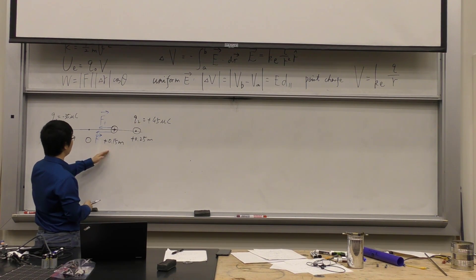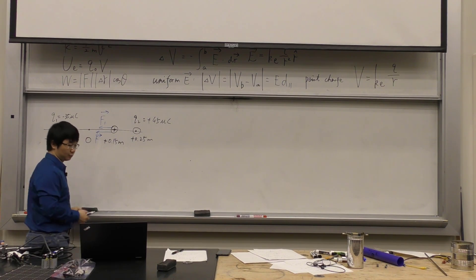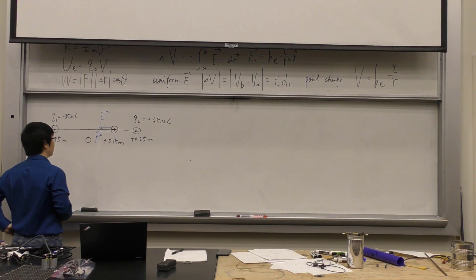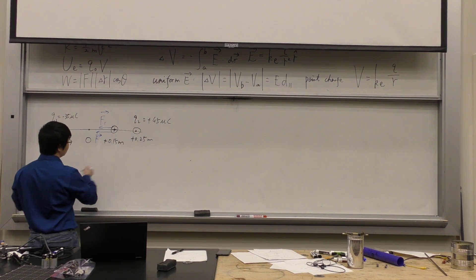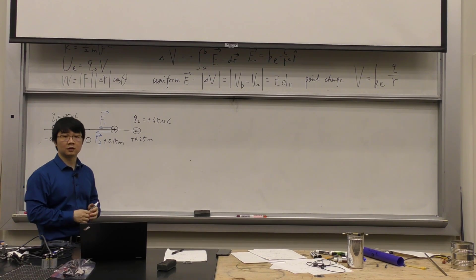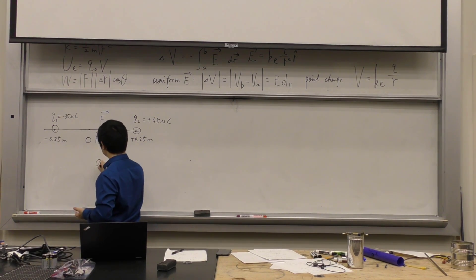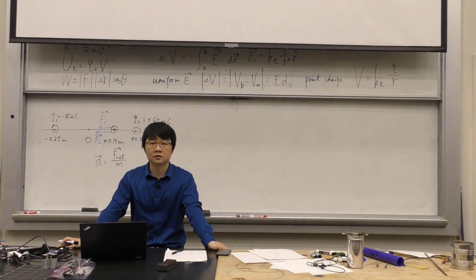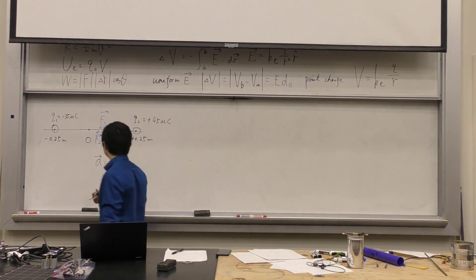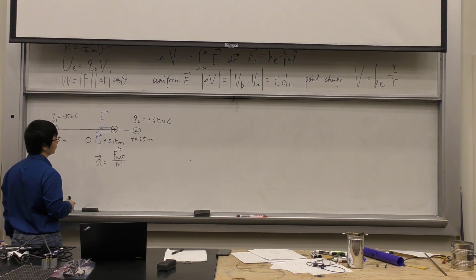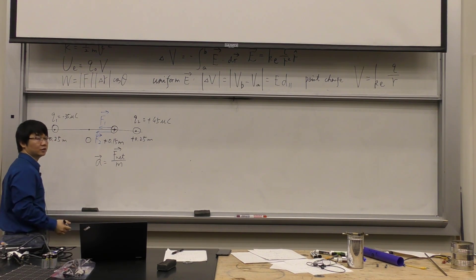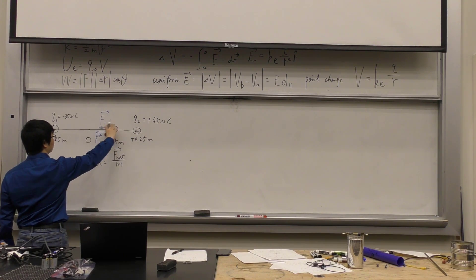So that's why the problem asks us to find the speed of the proton when it reaches the origin. There are two electric forces on this proton. If these two forces were constant, we could use Newton's second law to find the acceleration and then use kinematic equations. But the proton is moving — it doesn't stay in one place. As it moves, do these two forces stay constant? No, they don't, because force depends on distance via Coulomb's law.